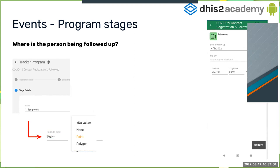For the program stage or events — in our case where the person is being followed up — go to Maintenance in the server, and in the Tracker Program go to the Program Stages section. In the stage details you have the feature type option, and again you select point, polygon, or none. In the Android application, inside the program stage you'll see the Follow-up program stage with a field asking for latitude and longitude, with the same map, coordinate, and clear options.